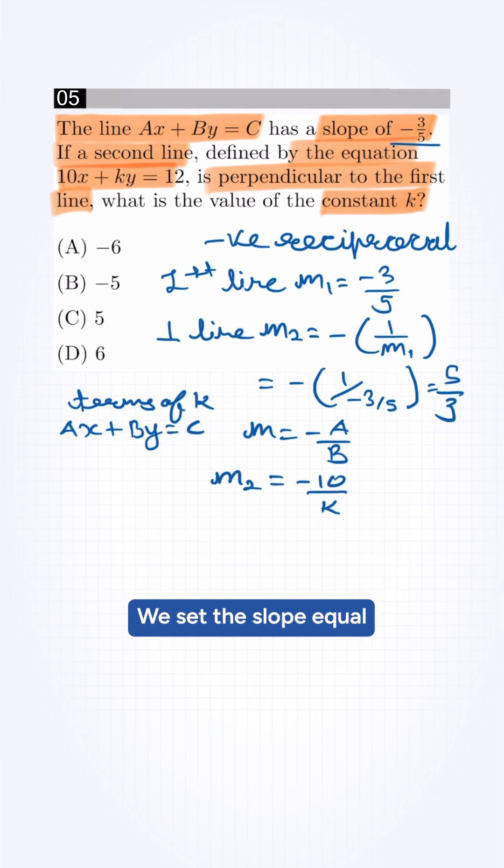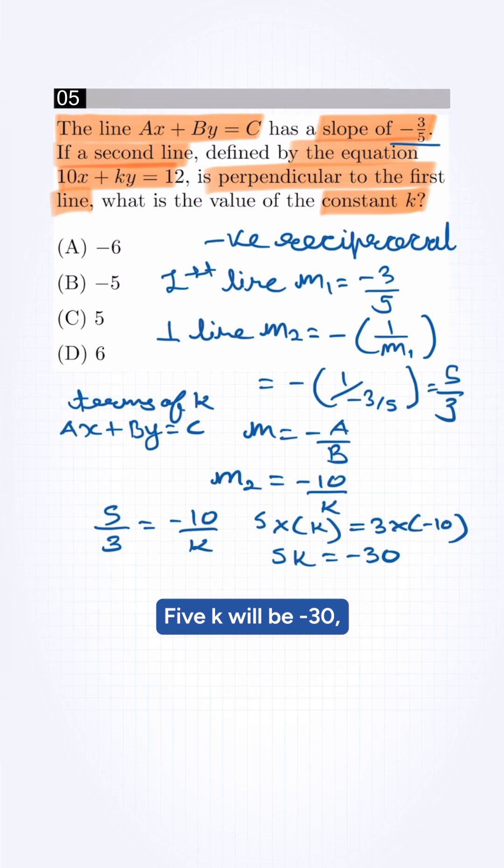We set the slope equal and solve for k. It will be 5 by 3 equals minus 10 by k. Simplifying this, 5 times k equals 3 times minus 10. 5k will be minus 30. K value will be minus 6.